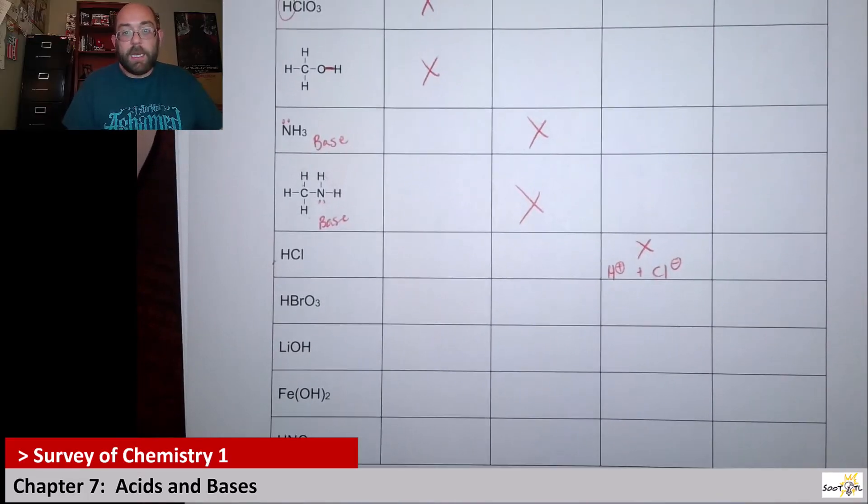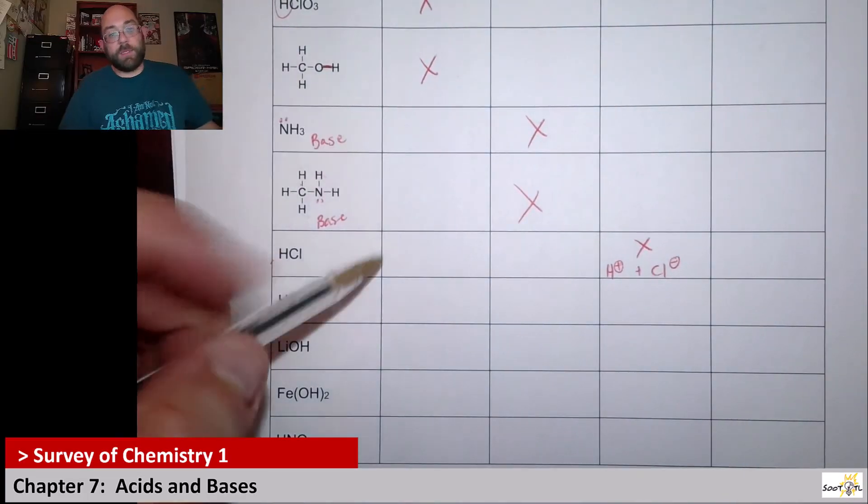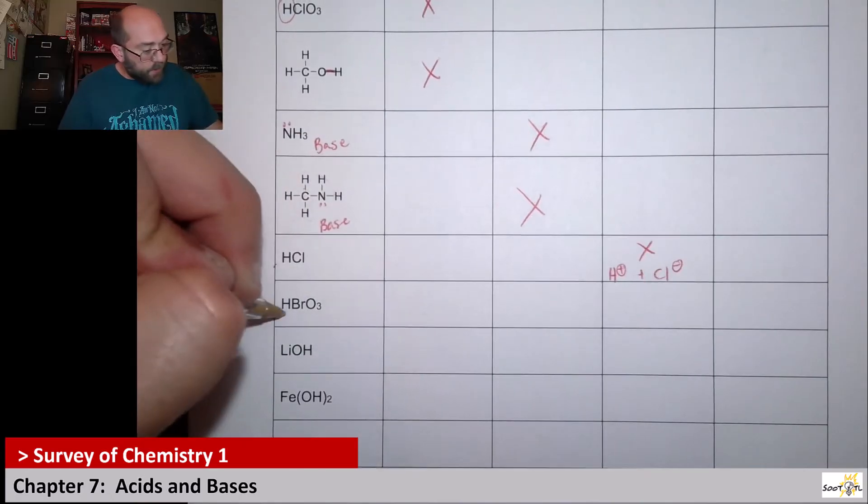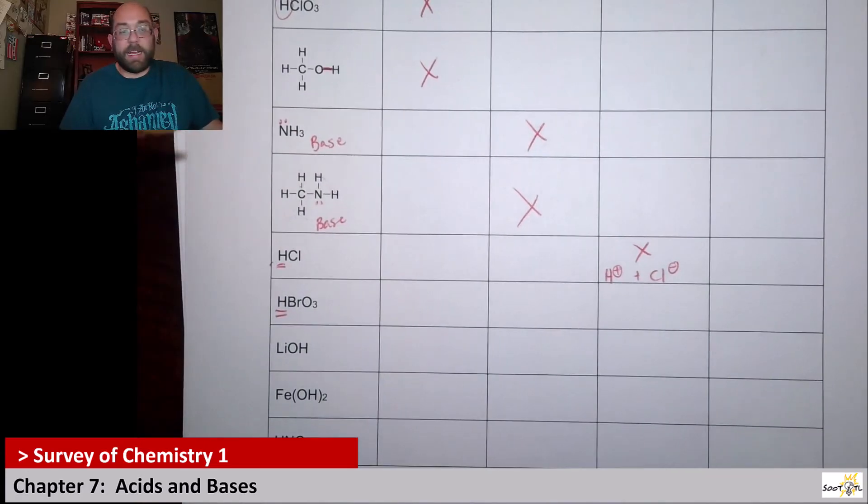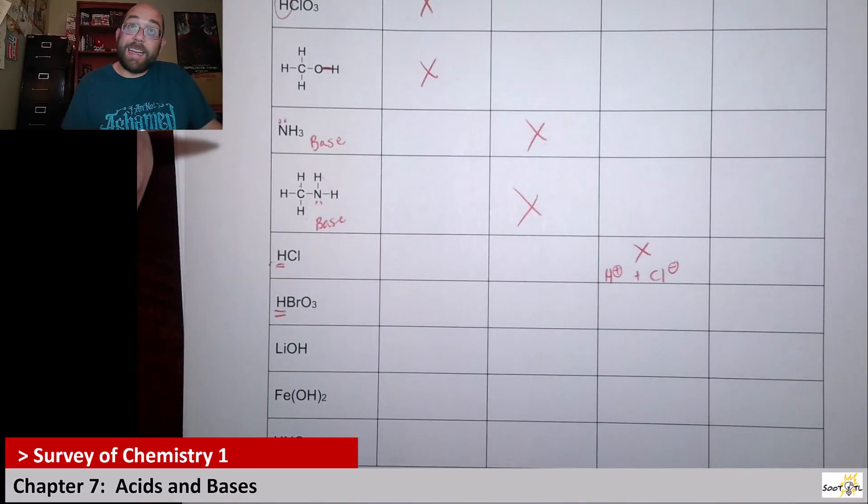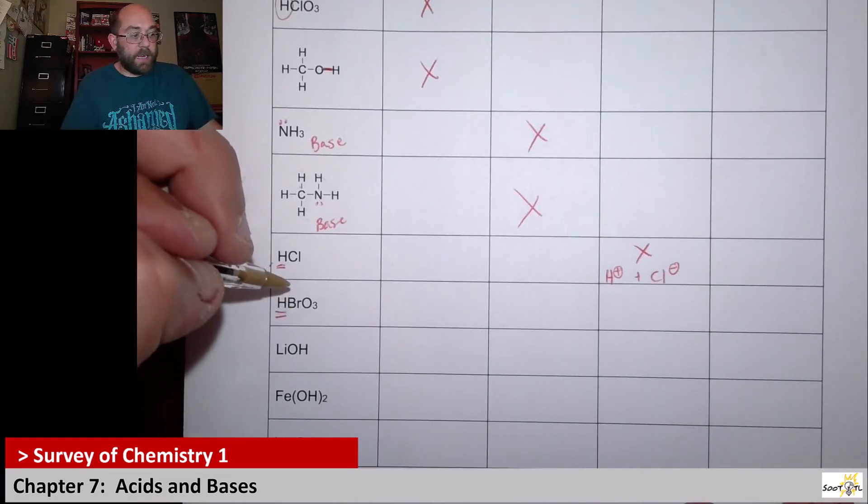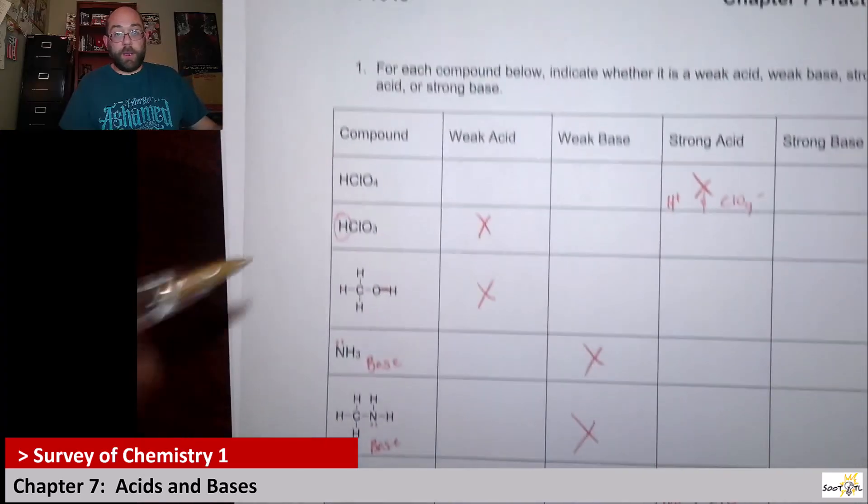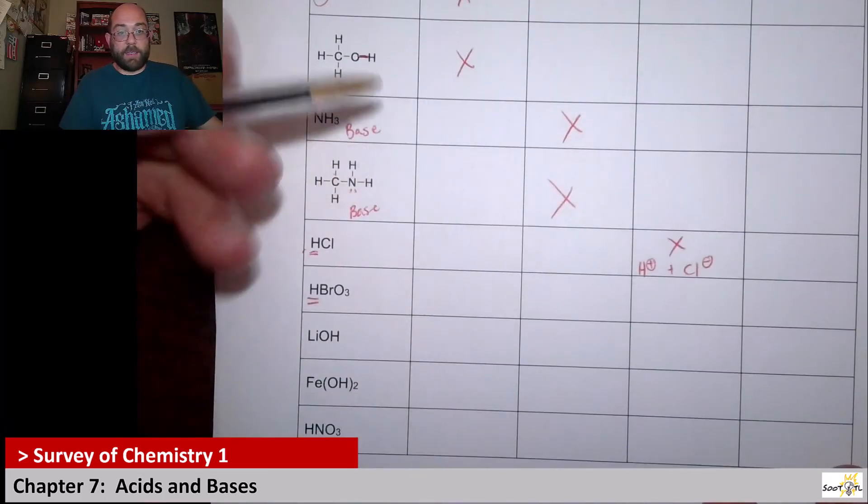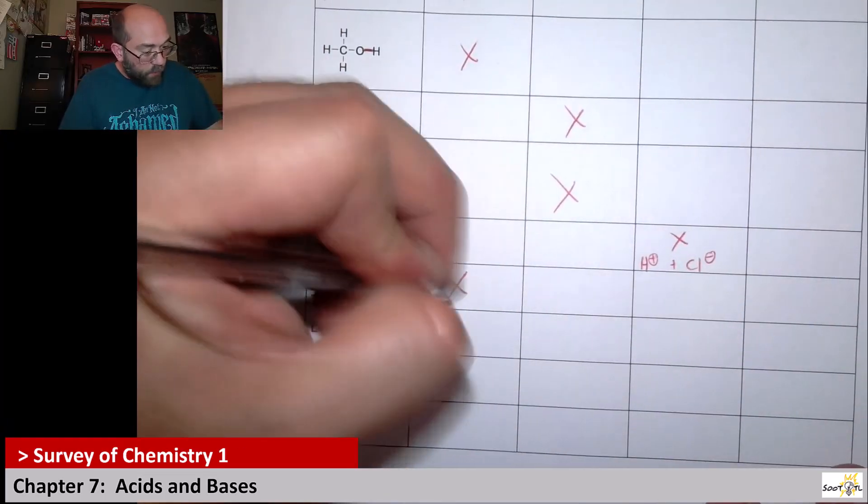And then here we have bromic acid. For this guy, this wasn't in our list either. You see the hydrogen out front—that tells us it would act like an acid. But it's not a strong acid, it's going to have to be a weak one. That first column is our weak acid column, so this is going to be more of a weak acid.